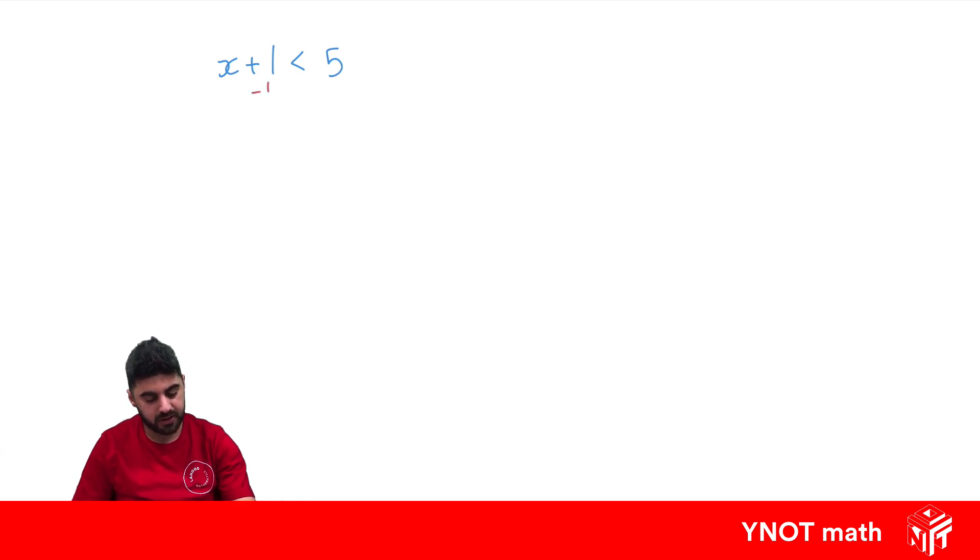So we're trying to get x by itself. So we're just going to minus 1 from both sides, which goes away. We get x is less than 5 minus 1 is 4. So our final answer is that x is less than 4.